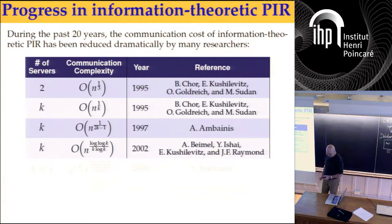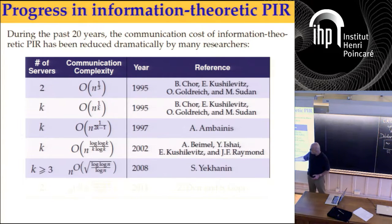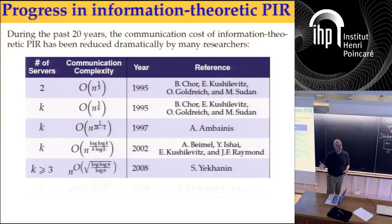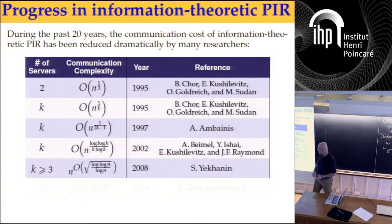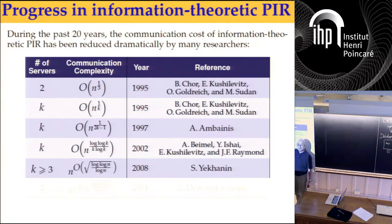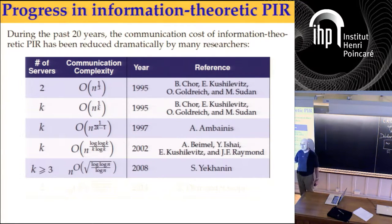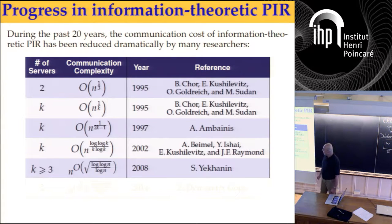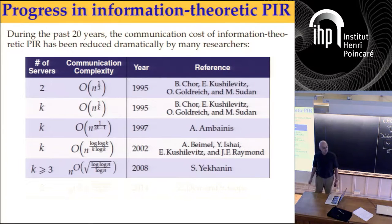Then there was a major result by Yekhanin, which reduced the complexity to something like n to the power 1 over log log n — assuming there are infinitely many Mersenne primes — but that condition was later removed by Efremenko. The important difference: this is n to a function that goes to zero as n grows.